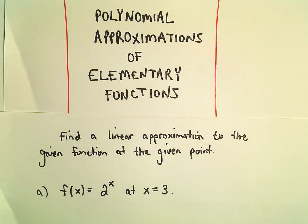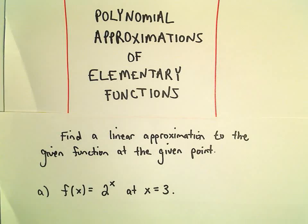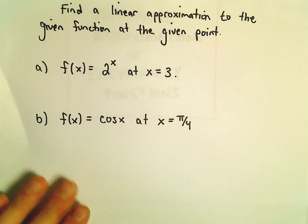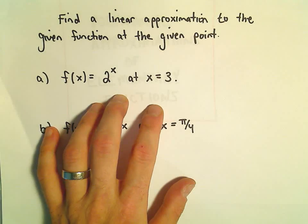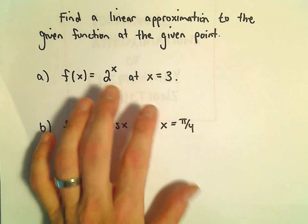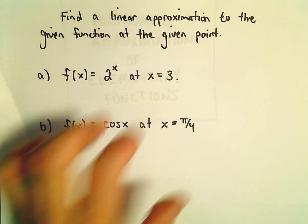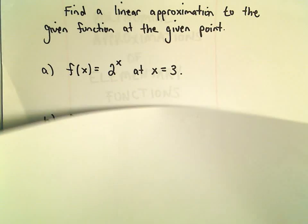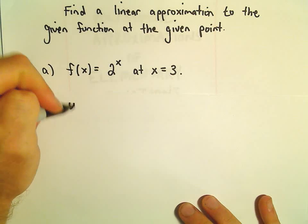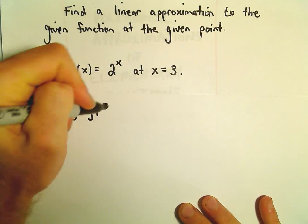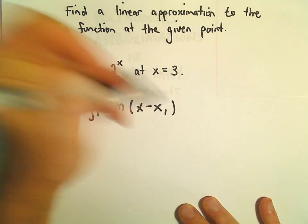One thing that series are good for is finding polynomial approximations to certain functions — that turns out to be super useful. We're going to keep it on the easy level here and just talk about finding linear approximations. This is actually just old first semester calculus stuff, where they have you find the equation of the tangent line or a linearization. That's all we're doing, so I'll go through these a little bit faster — we're just finding the equation of a line.